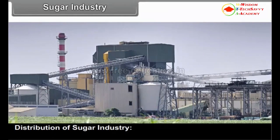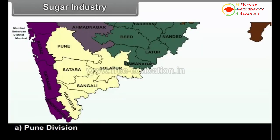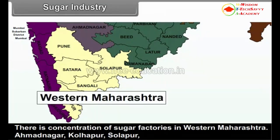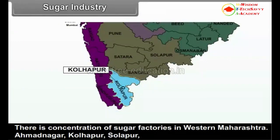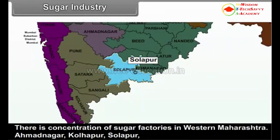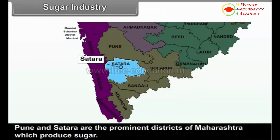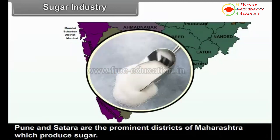Distribution of sugar industry. A. Pune Division: There is a concentration of sugar factories in Western Maharashtra. Ahmednagar, Kolhapur, Solapur, Pune and Satara are the prominent districts of Maharashtra which produce sugar.